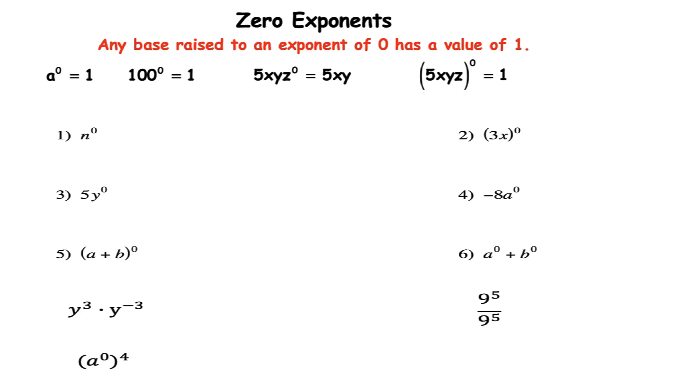Now if you have a base raised to an exponent of zero then the result would be one. So I have a couple of examples here at the top. I have a which is my base raised to the exponent zero so the answer is one. Again any base raised to the zero power. So here my base is a hundred and my exponent is zero so the solution is one.